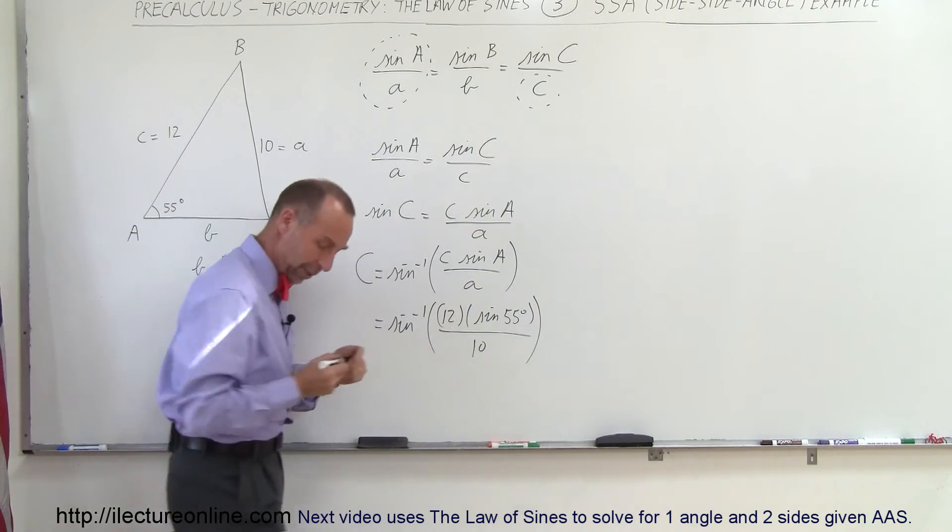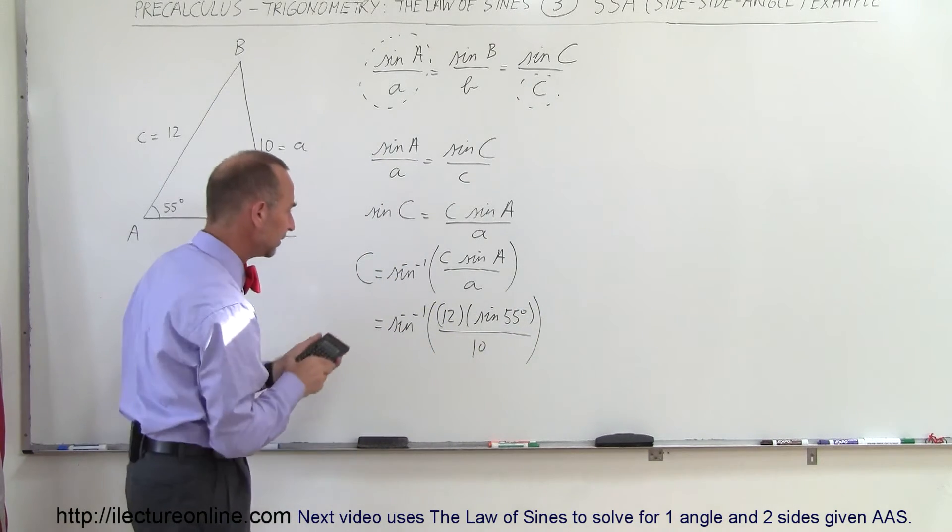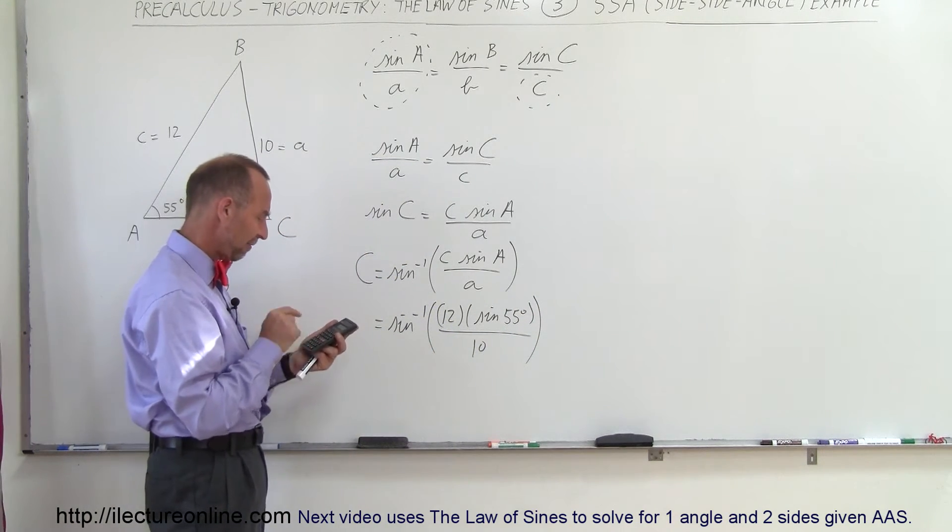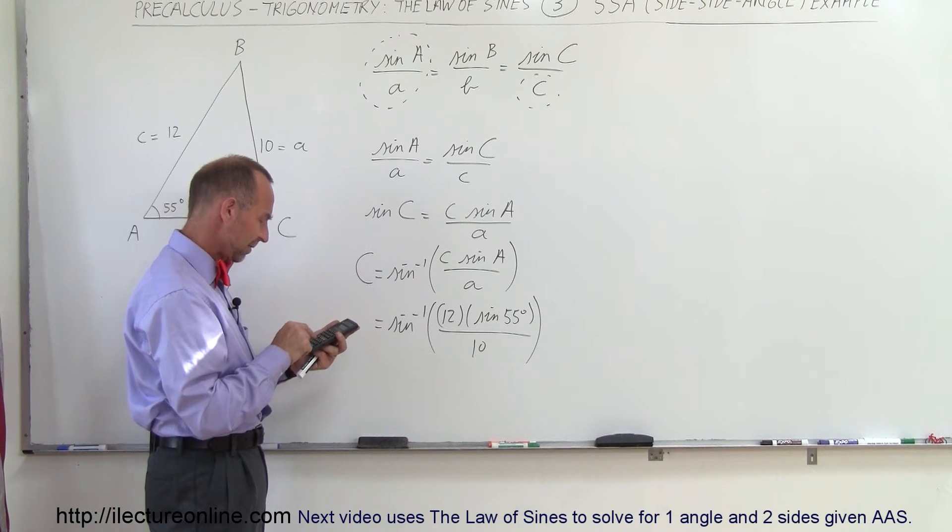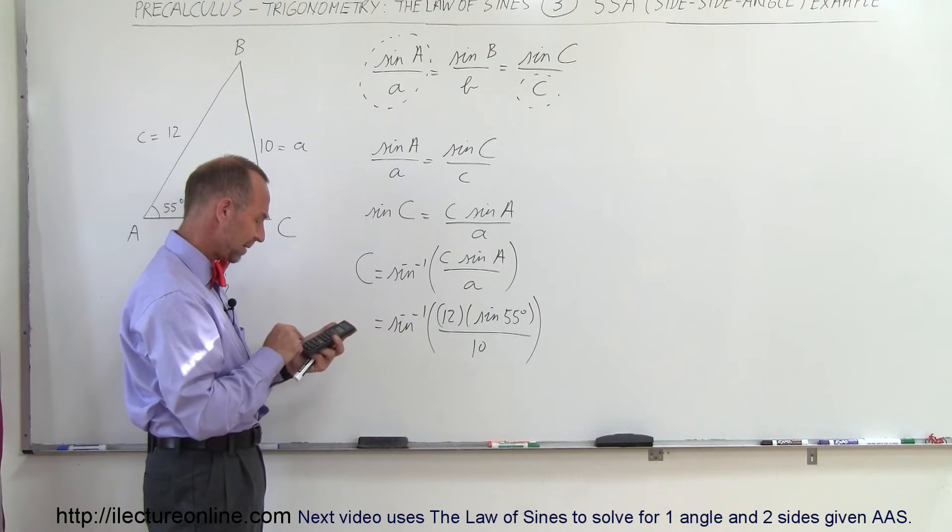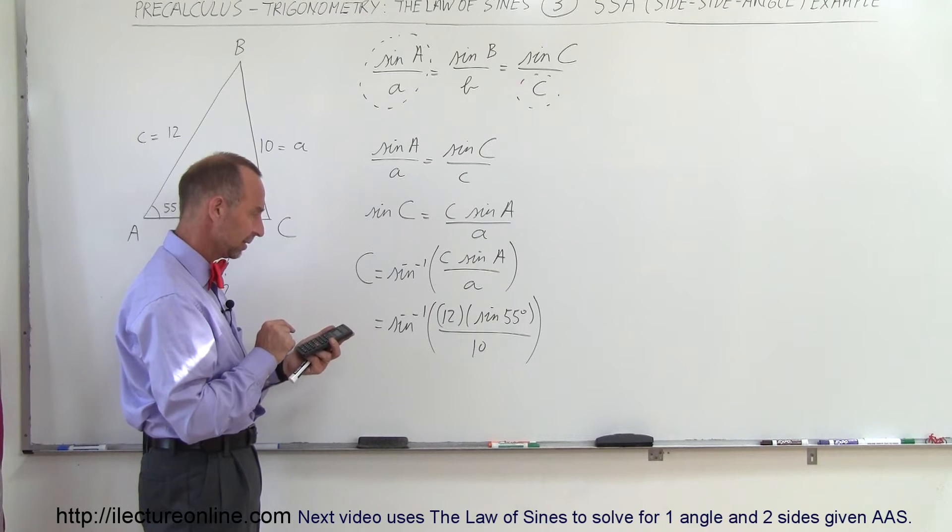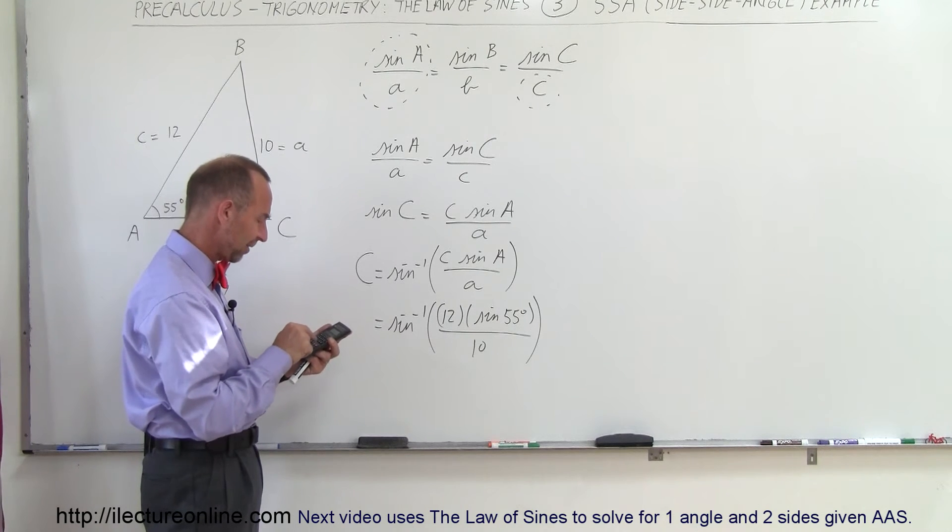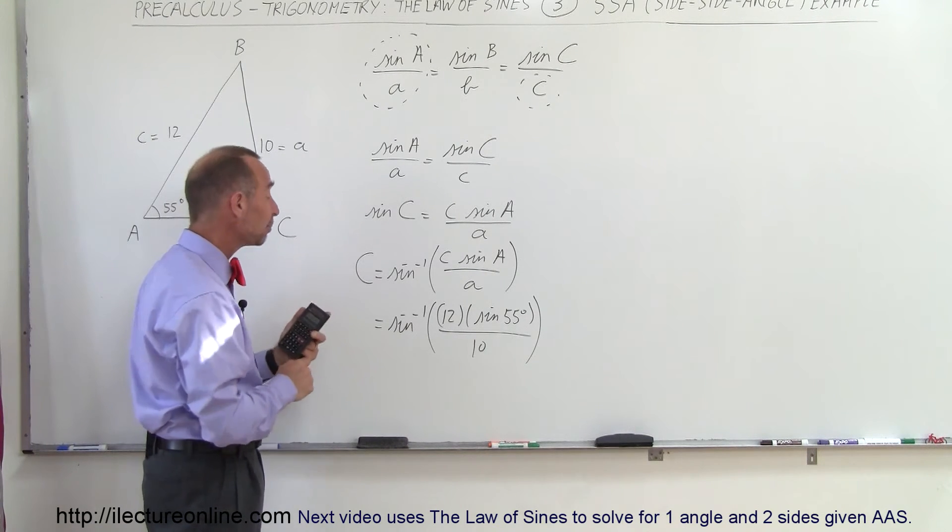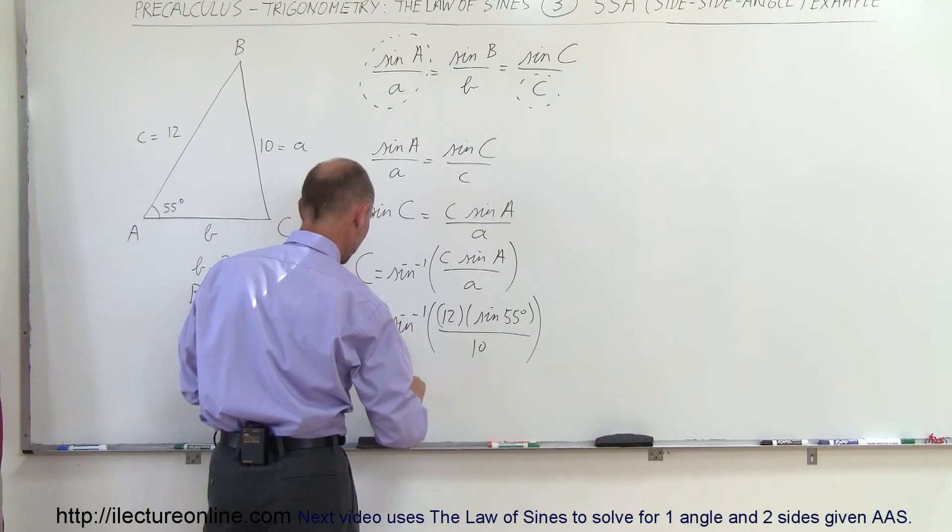And let's see what we get. So here's the calculator. So sine of 55 times 12 divided by 10 equals... alright, and now we take the arcsine of that. And we get 79.4 degrees. So the angle C is equal to 79.4 degrees.